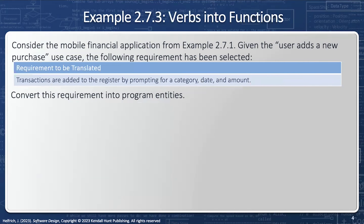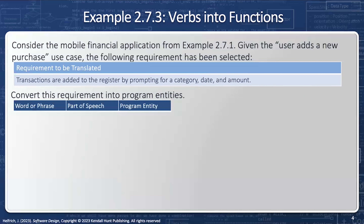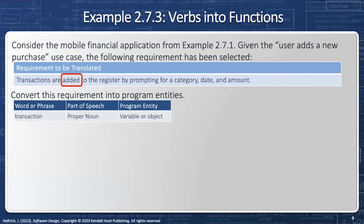Let's take a look at another requirement: transactions are added to the register by prompting for a category, date, and amount. I have my word and phrase, my part of speech, and my program entity. Starting with 'transaction' — that's a proper noun, so it's a variable or object. 'Added' is an action verb, so I'm going to have list.add as my method, and it's going to take a transaction.